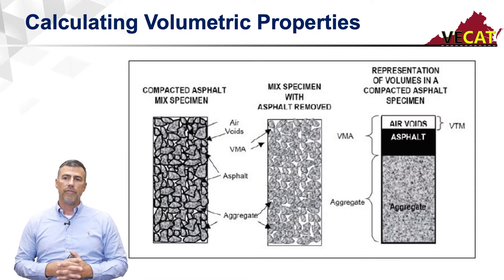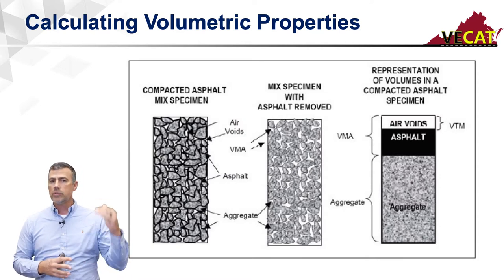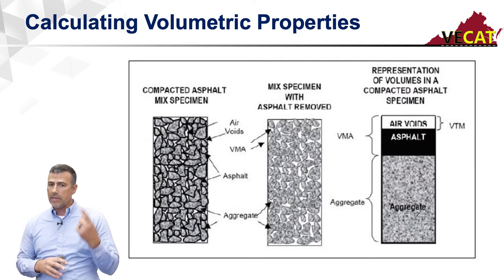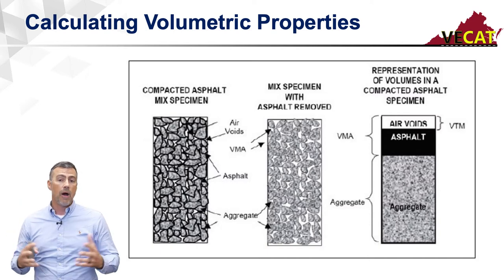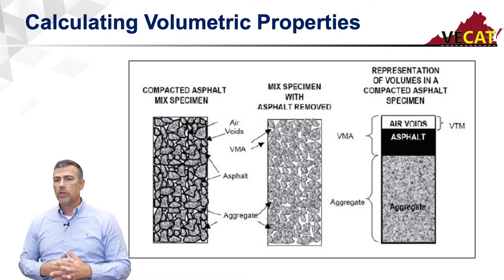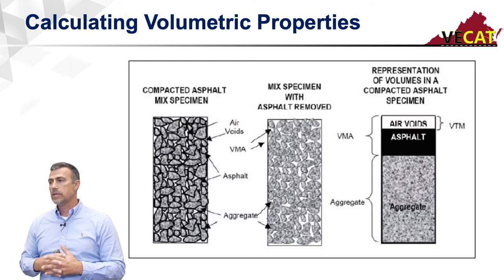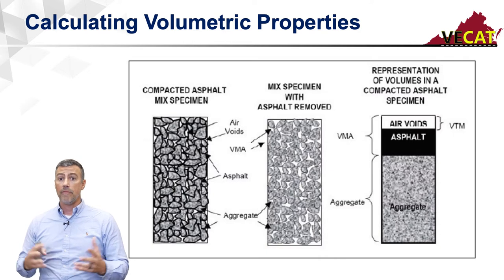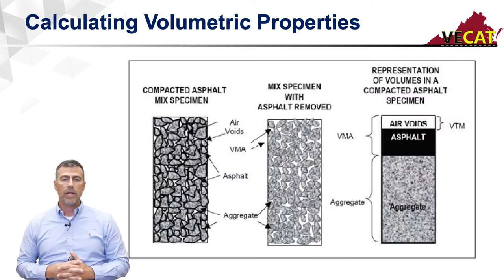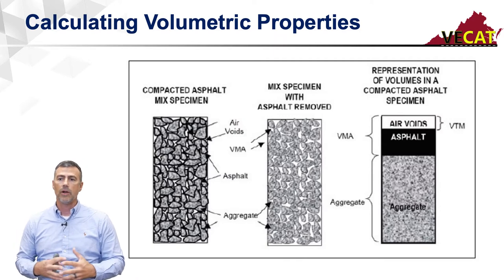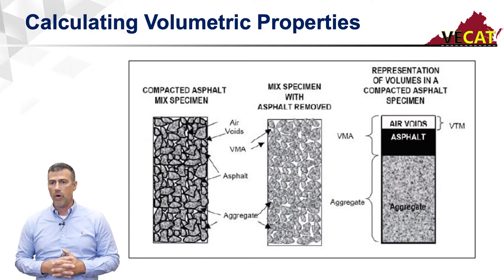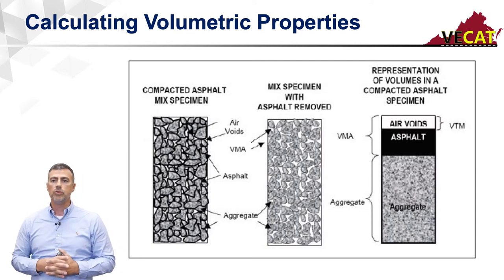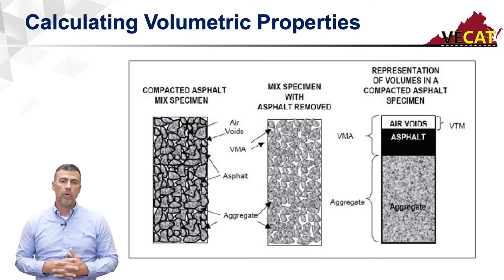If you jump to the image on the far right, we're talking about all those same components — those three primary components: aggregate, asphalt, and air voids — but broken up into their specific volume within that sample. The predominant component is our aggregate, probably 80 to 90 percent by volume. Then you can see the asphalt volume, and then the smallest amount is that air void volume. So that helps you visualize the three different primary components in the mix.